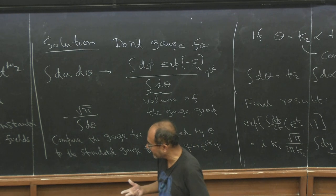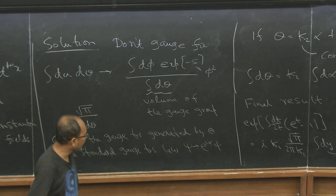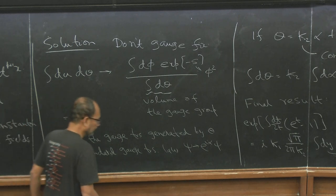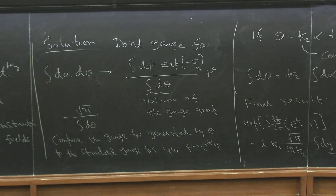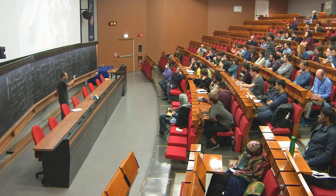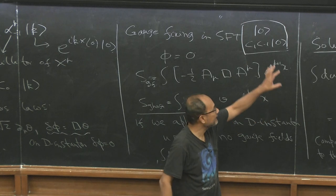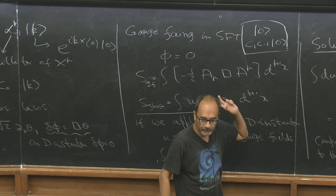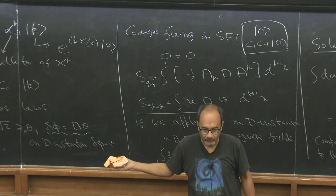The Faddeev-Popov ghosts that you get by gauge fixing phi equal to zero. Those are the extra two zero modes which are reflected in these two states that I wrote down: zero and c1 c-1 on zero. These are the Faddeev-Popov ghosts that you would have gotten by gauge fixing that phi to zero. So in the original expression, these were responsible for this minus two.